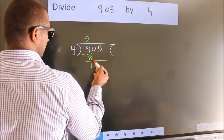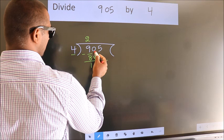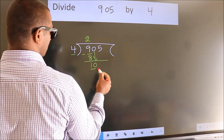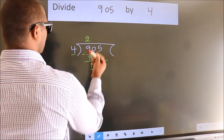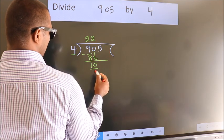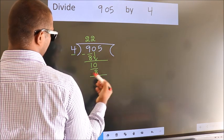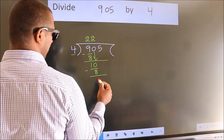After this, bring down the beside number. So, 0 down. So, 10. A number close to 10 in 4 table is 4 2s 8. Now, we subtract. We get 2.